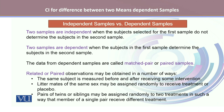Paired observations may be obtained in a number of ways. The same subject is measured before and after receiving some intervention. Litter mates of the same sex may be assigned randomly to receive treatment or placebo. Similarly, pairs of twins or siblings may be assigned randomly to two treatments in such a manner that members of a single pair receive different treatments.